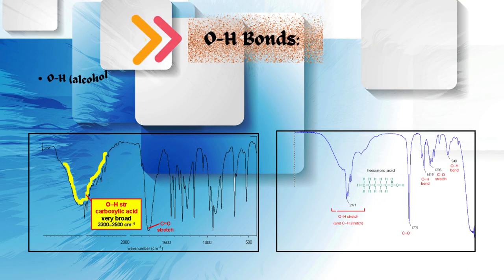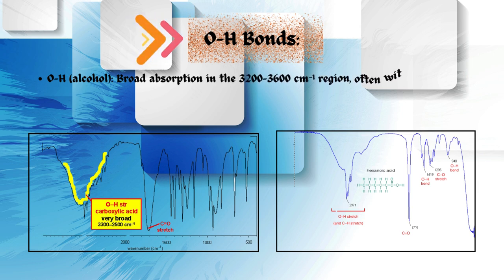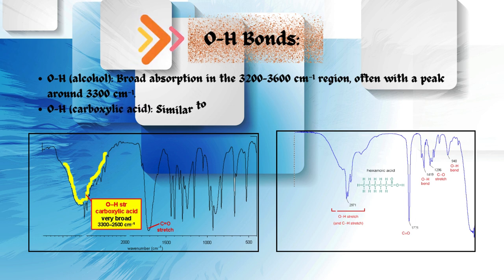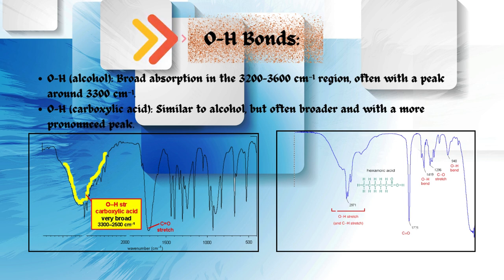Oxygen and hydrogen OH bonds. OH bond in alcohol: broad absorption in the 3,200 to 3,600 per centimeter region, often with a peak around 3,300 per centimeter. OH bond in carboxylic acid, similar to alcohol, but often broader and with a more pronounced peak.